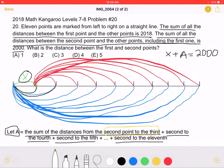And the distance from the first to the fourth point is going to be X plus the distance between the second to the fourth point.